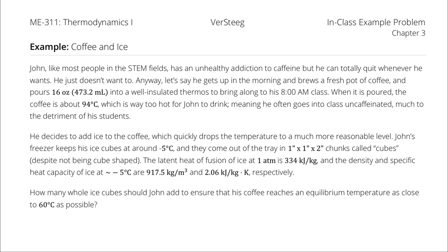When it is poured, the coffee is about 94 degrees Celsius, which is way too hot for John to drink, meaning he often goes into class uncaffeinated, much to the detriment of his students. He decides to add ice to the coffee, which quickly drops the temperature to a much more reasonable level. John's freezer keeps his ice cubes at about negative 5 degrees Celsius, and they come out of the tray in 1 inch by 1 inch by 2 inch chunks called cubes, despite not being cube-shaped.